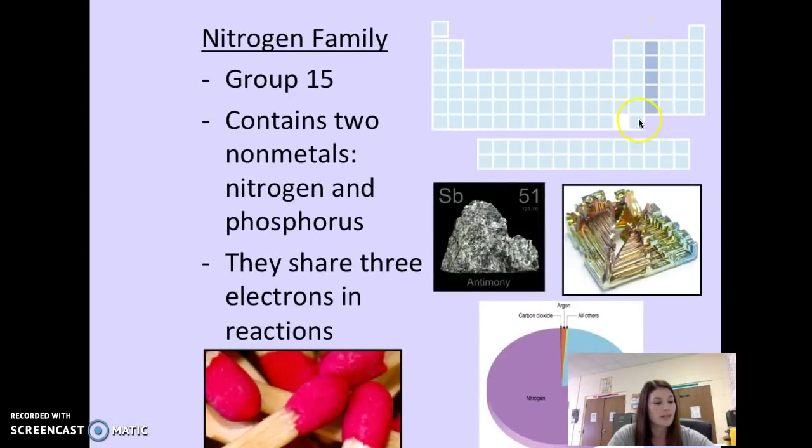The nitrogen family is next. The nitrogen family is found in group 15. There are two nonmetals, which are nitrogen and phosphorus, found in this group. Nitrogen makes up most of our air. So about 78% of our atmosphere that we breathe every day is made of nitrogen. Phosphorus can be found on the end of matches, the part you swipe to make the fire.